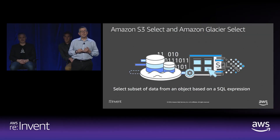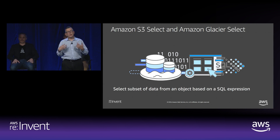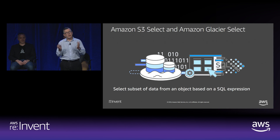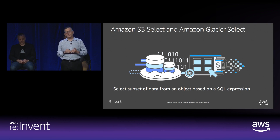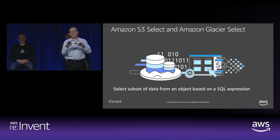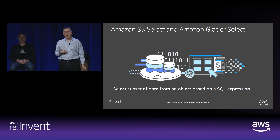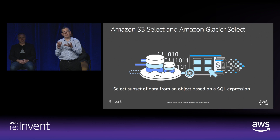Another key consideration in building a data lake is we continue to try to add capabilities to S3 that are really going to enhance what you can do with your data. Last year, the first step in this was we introduced S3 Select and Glacier Select, where essentially you can start to access your data in a way that's much more optimized for analytics and data lake style environments than just the traditional get object.